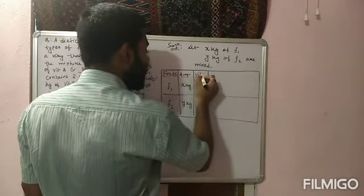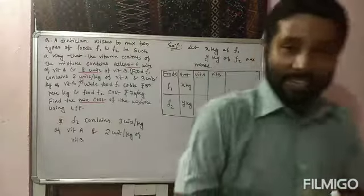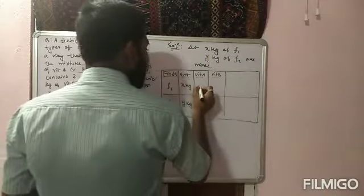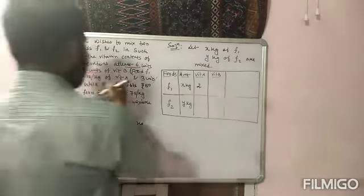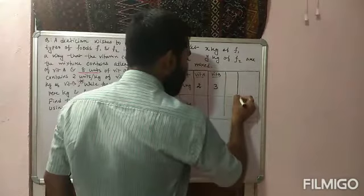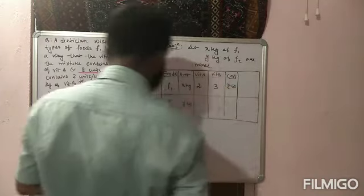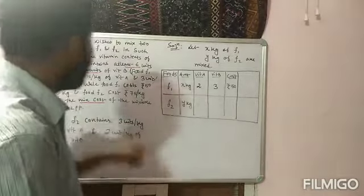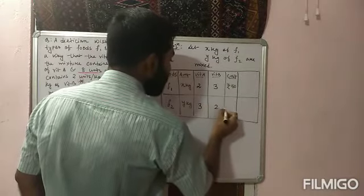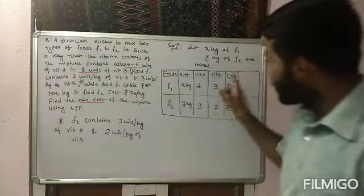Fill in the table: Food F1 — two units per kg of vitamin A, three units per kg of vitamin B, cost rupees 50 per kg. Food F2 — three units per kg of vitamin A, two units per kg of vitamin B, cost rupees 75 per kg. If any value is missed in the table, there will be a problem forming the equations.